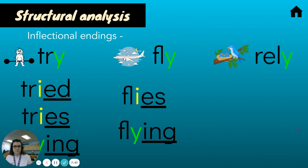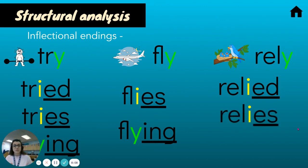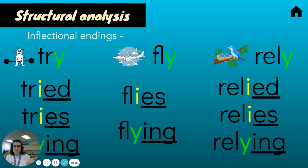Let's talk about another example: 'rely' — like when you are counting on someone to help you out. I can say 'relies,' like 'she relies on me,' or 'she relied on me' — I would change the Y to an I and add ED. Or 'relies' — you change the Y to an I and add ES. But 'relying' — if I said 'they are relying on me,' I wouldn't change my Y; I can just add ING.